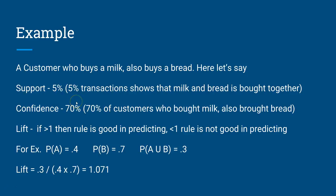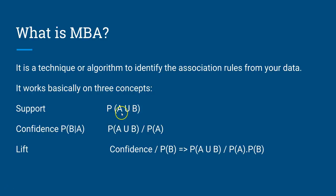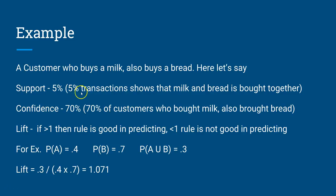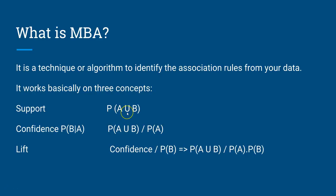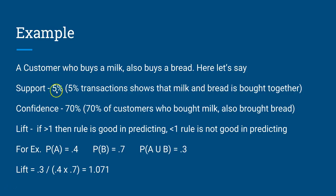Here is an example: a customer who buys milk also buys bread. If the support value is 0.05, that means 5% of transactions show that milk and bread are bought together. Going back to the previous slide, this is the same as A union B — product A and B getting sold together. So if 5% is the support value for a rule, it means 5% of overall transactions show milk and bread being bought together.